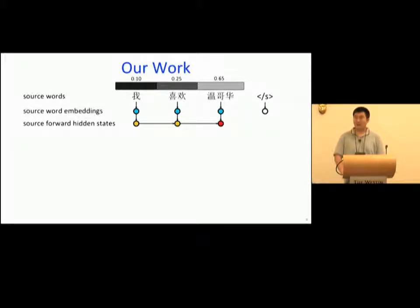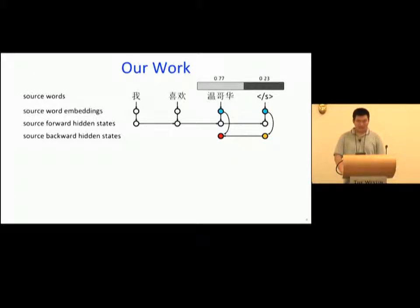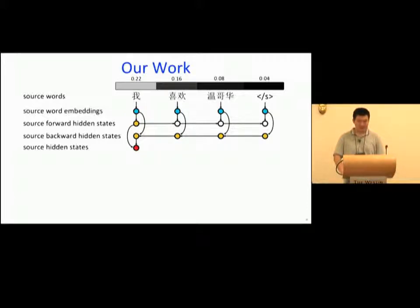LRP calculates the relevance for backward hidden states in a similar way. Note that the contextual and intermediate nodes are changing for each target node. Now, for source hidden states, from the values of relevance, it is clear to know how contextual words contribute to the generation of hidden states.